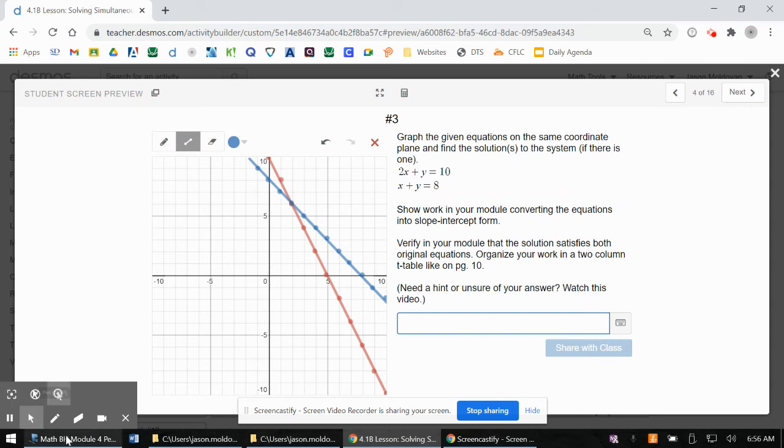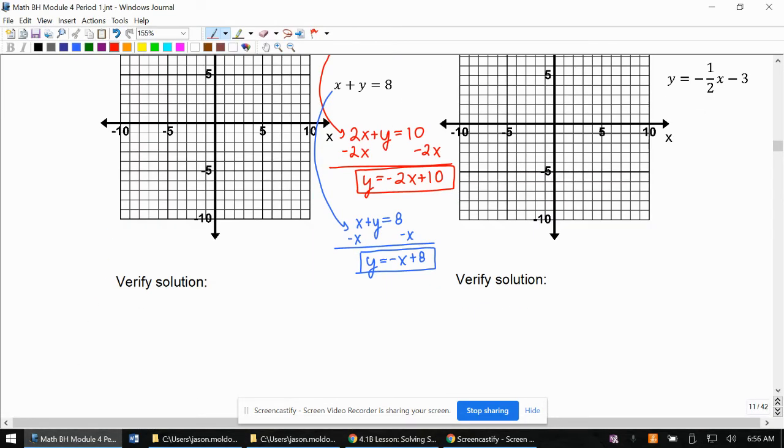Before I type that in, I'm going to go over and do my verify before I lock in my answer. So I'm claiming that 2 comma 6 in parentheses with a comma is my answer. So let's see if that's the case. We're going to do verifies in the original.